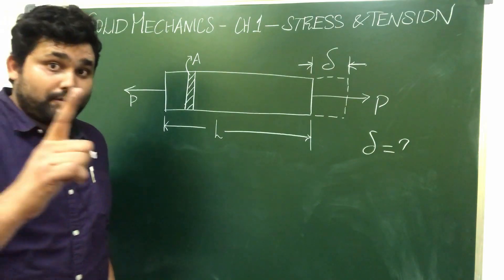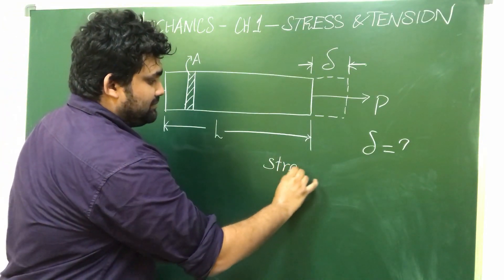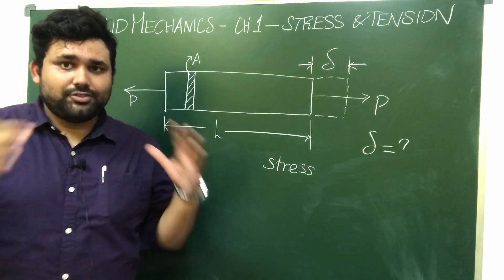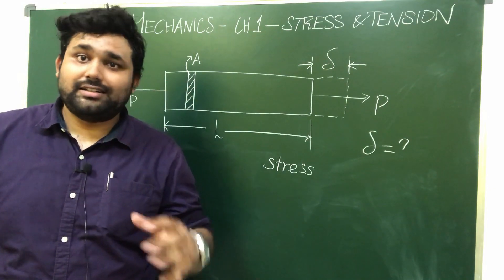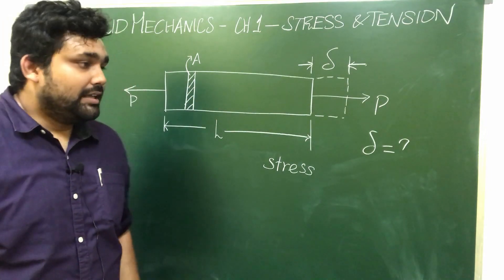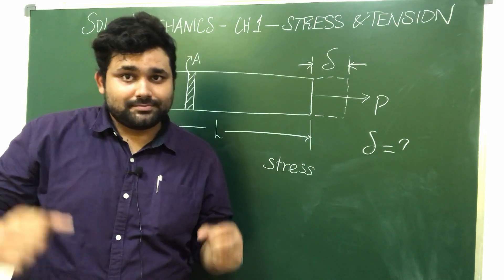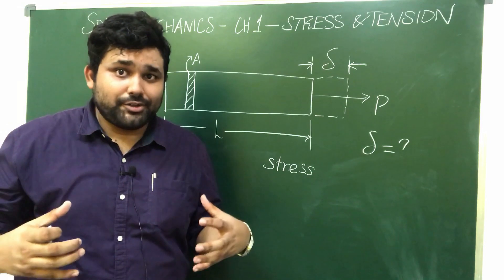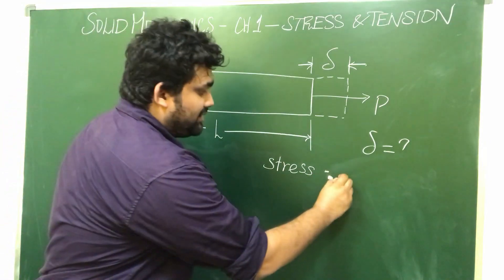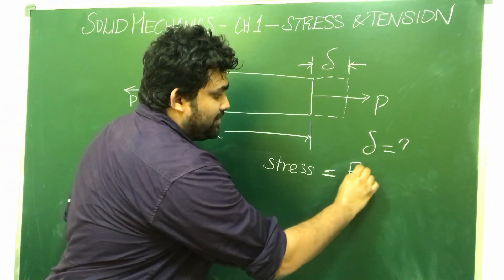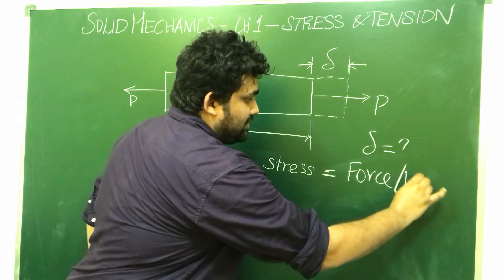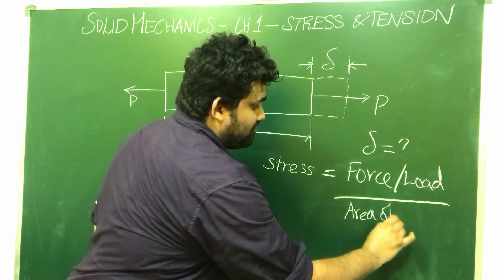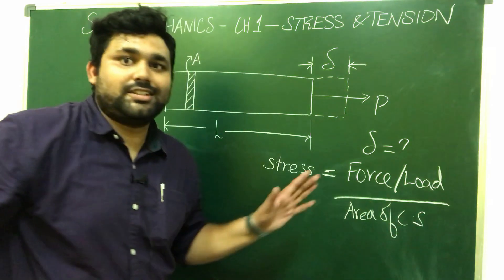Definition number 1: Stress. Stress is what the material endures when a load acts on it. It is defined as the force acting on the material divided by the area of cross-section. Stress equals force divided by area.